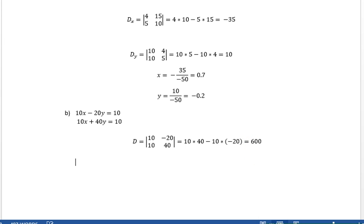So for d sub x, what am I going to do? I'm going to copy this. For d sub x, what are we doing? We're substituting in the 10 and the 10 for the values in the x column. Well, they're 10 and 10. So this is also going to be 600.